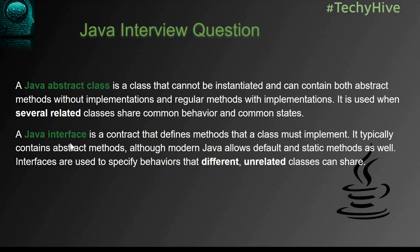On the other hand, a Java interface is a contract that defines methods that a class must implement — it defines a blueprint that a class has to follow. Interfaces traditionally contain abstract methods, although modern Java allows default and static methods as well. Since Java 8, you can have static, private, and default methods in Java, but before Java 8 only abstract methods were allowed. Interfaces are used to specify behaviors that different unrelated classes can share.